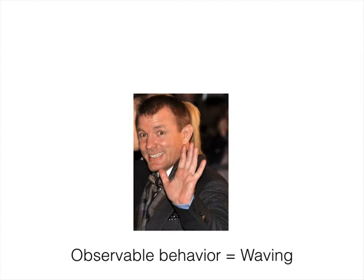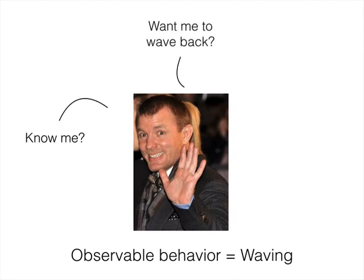One intuitive example is when we see a stranger waving at us. We might guess at things like whether or not he knows me, he wants me to wave back, or maybe he's not actually waving to me at all, but waving at someone behind me. And what's important is that we make all these inferences quite easily and quite rapidly.